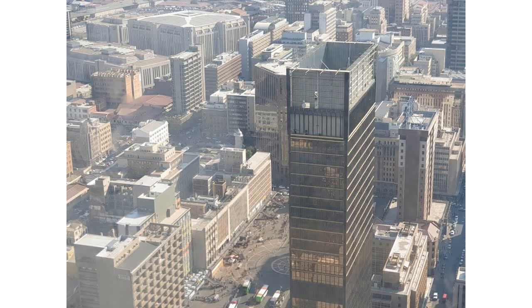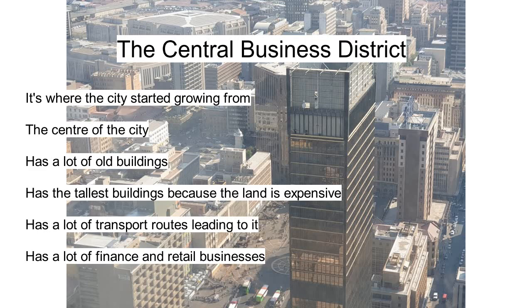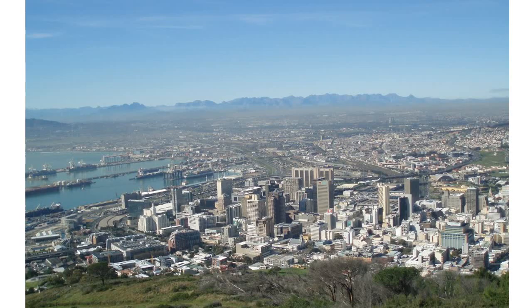This is a photograph of Johannesburg and it is an example of a central business district. The CBD is the area that a city started growing from, generally found in the center. It has a lot of very tall buildings because land is very expensive there. There are lots of transport routes leading to it and a lot of finance and retail businesses. That's Cape Town CBD — you can see the harbor and the roads leading into the city.